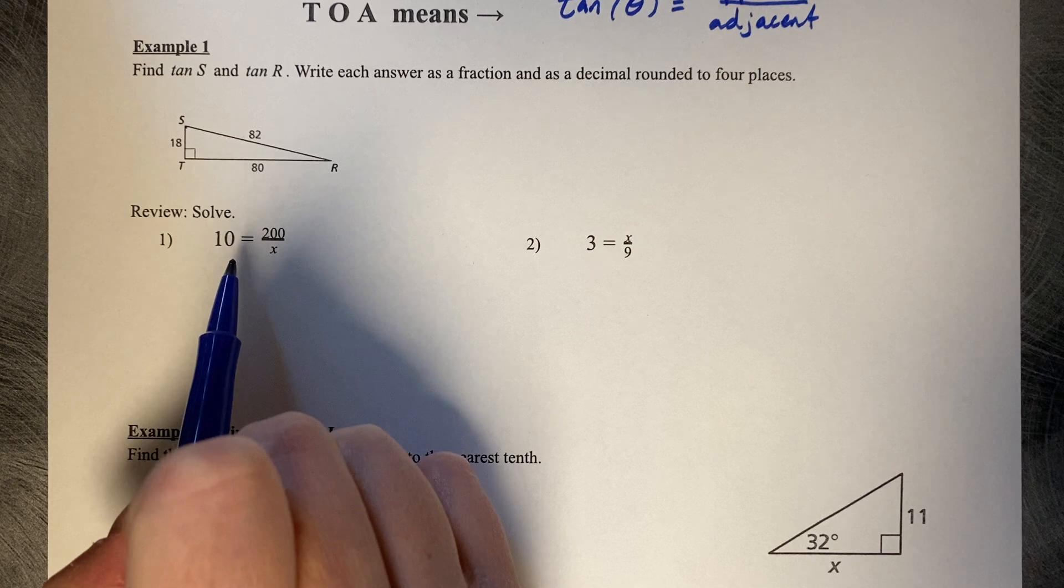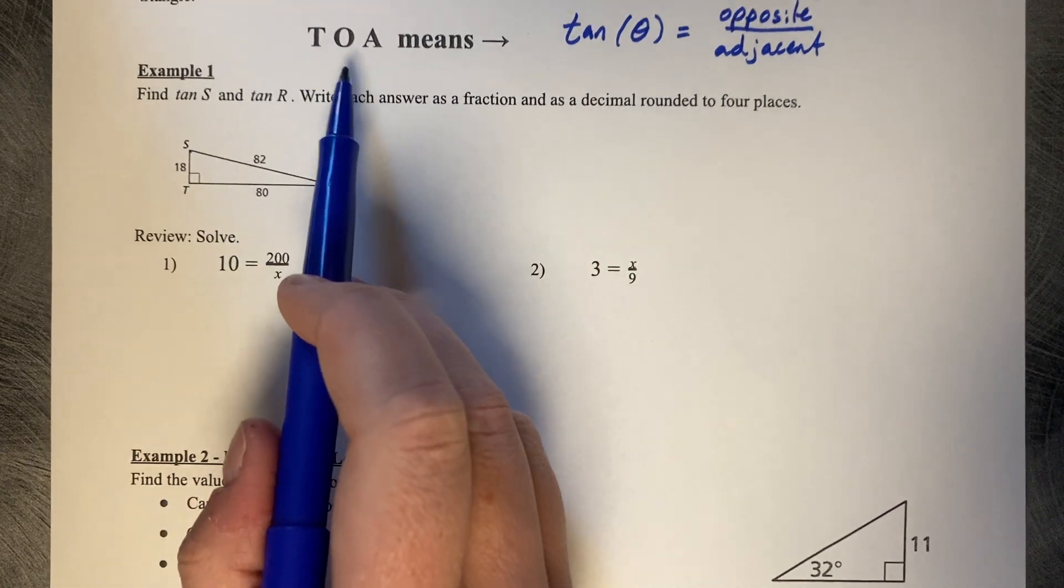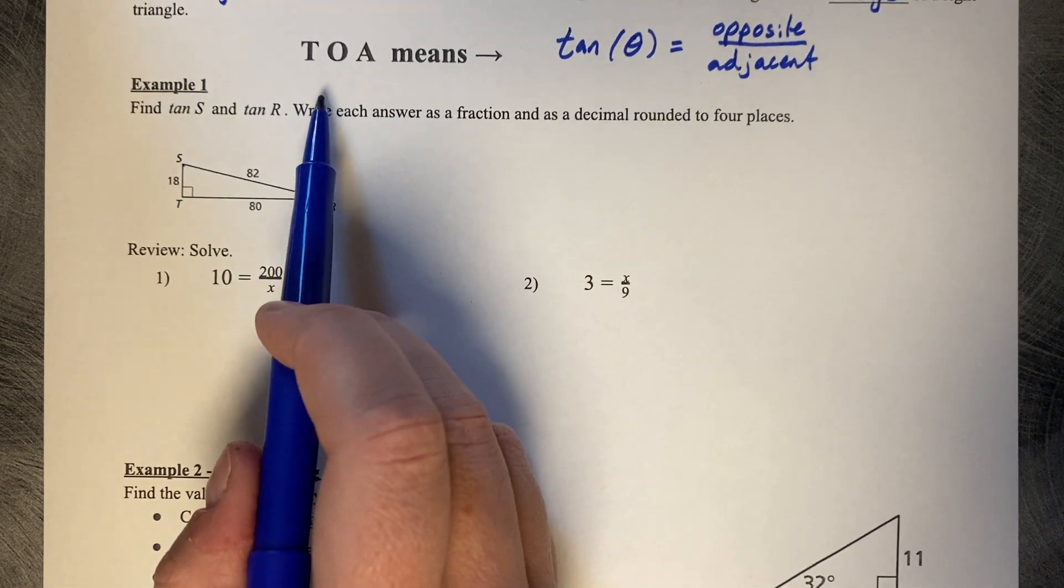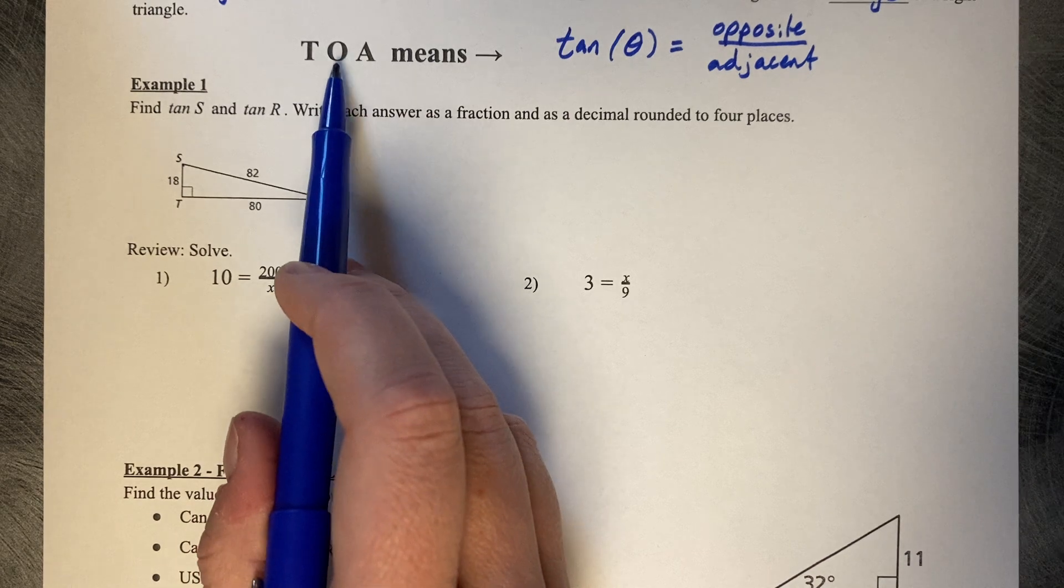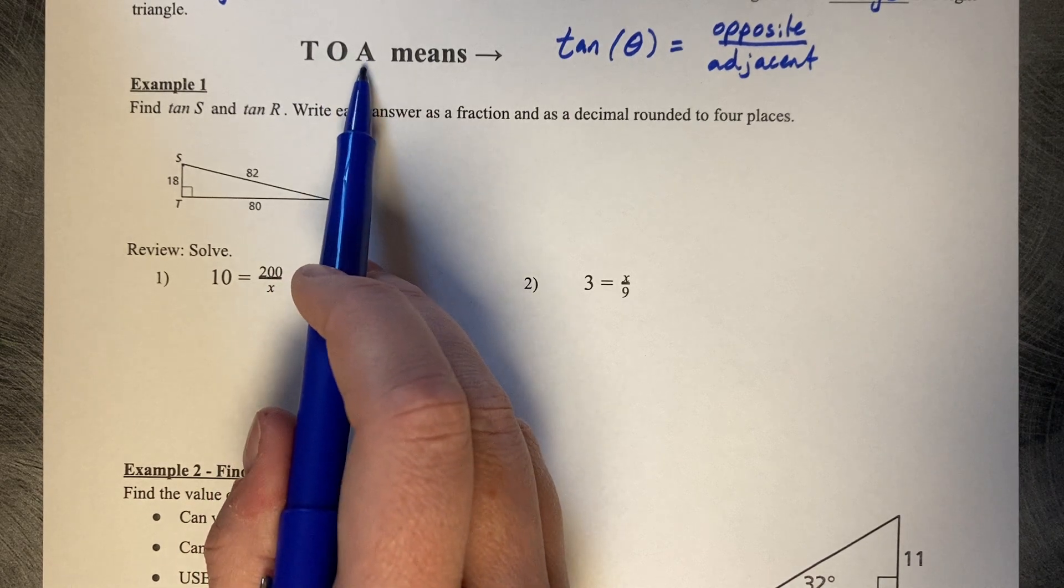82 will always be the hypotenuse, but when we're working with tangent, we are not working with the hypotenuse. We're only working with our opposite and adjacent.